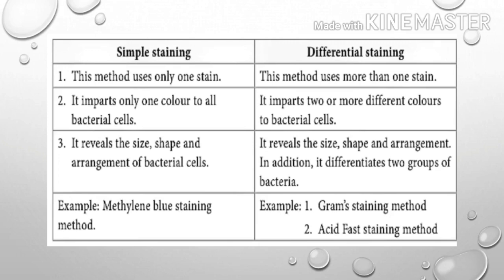In gram staining, the purple color and red color differentiate gram positive and gram negative bacteria. That is why gram staining is called a differential staining — it differentiates two groups of bacteria.